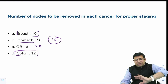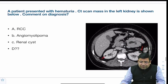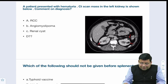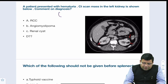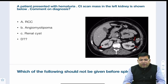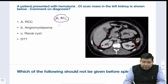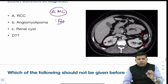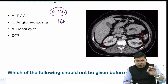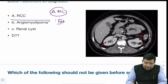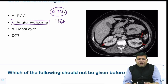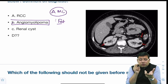A patient presented with hematuria and a left renal mass. On CT scan, anything that can be confidently diagnosed is AML — angiomyolipoma — because of its fat content. Fat-ridden areas on CT can be confidently identified. Angiomyolipoma consists of tortuous blood vessels, smooth muscles, and fat — hence the name: angio (blood vessels), myo (smooth muscles), lipoma (fat).